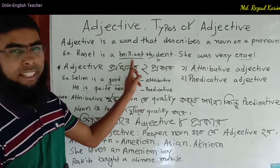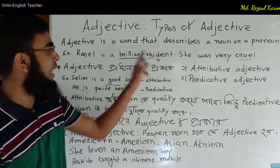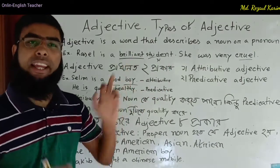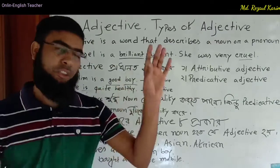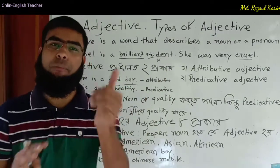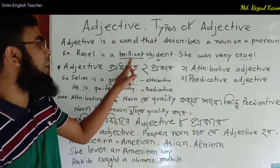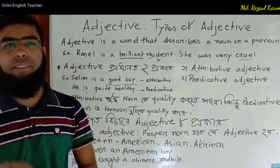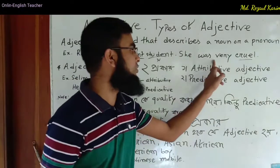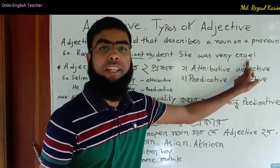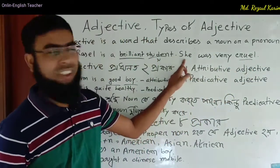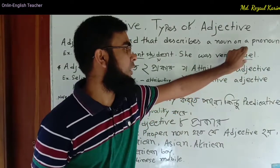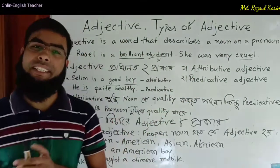Here 'student' is the noun and 'brilliant' is the adjective — it indicates and qualifies the noun 'Russell.' Another example: She was very cruel. Here 'cruel' is the adjective that qualifies the pronoun 'she.'